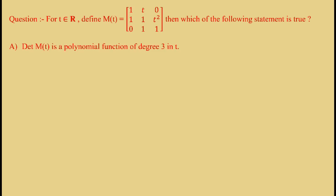The options are: Option A - Determinant of M(t) is a polynomial function of degree 3 in t. Option B - Determinant M(t) is equal to 0 for all t belongs to R. Option C - Determinant M(t) is not equal to 0 for all t belongs to R. And Option D - Determinant M(t) is 0 for exactly 2 t belongs to R.